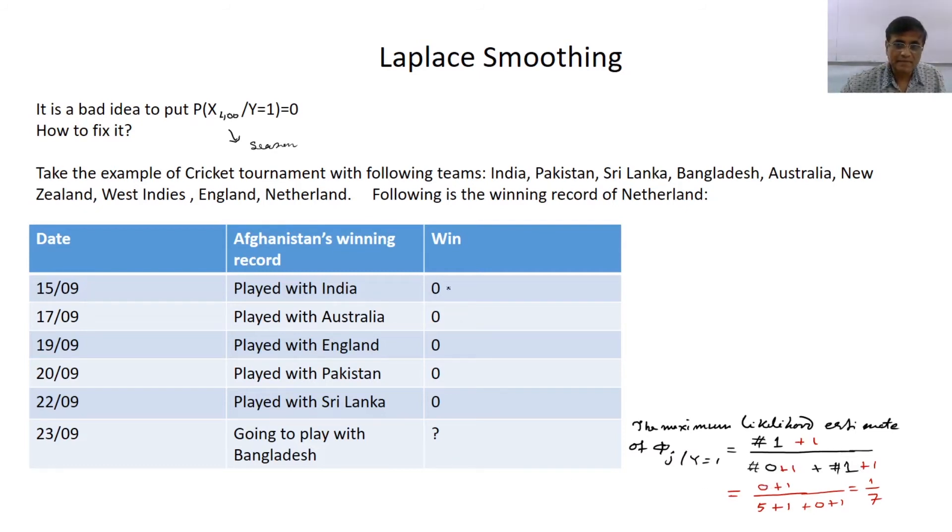Then instead of getting 0, we will get a very low probability which is very practical. Netherlands has been defeated throughout all the previous matches, it does not mean it will not win in the future match. So Laplace smoothing is trying to put some weightage to that. As a result now probability of Netherlands winning against Bangladesh is 1 by 7 which is not great but still it saved from 0 probability.